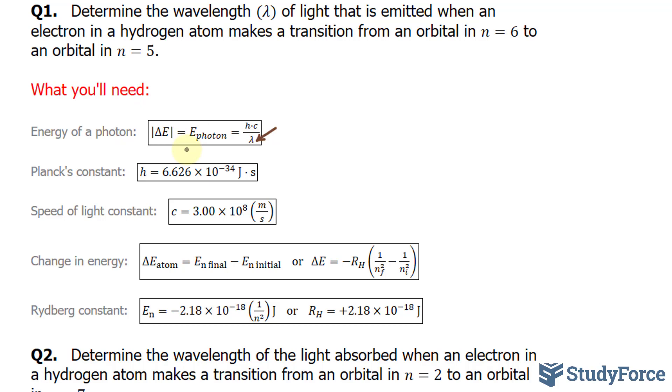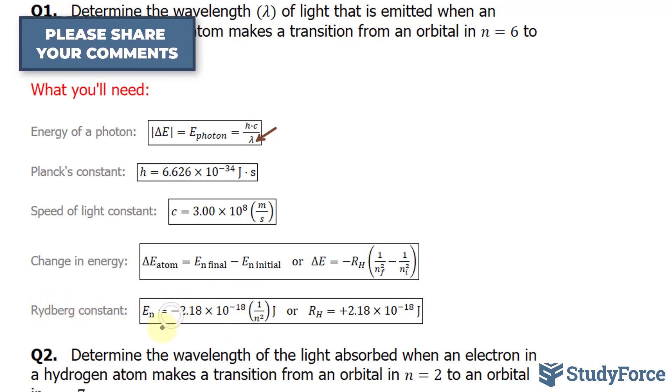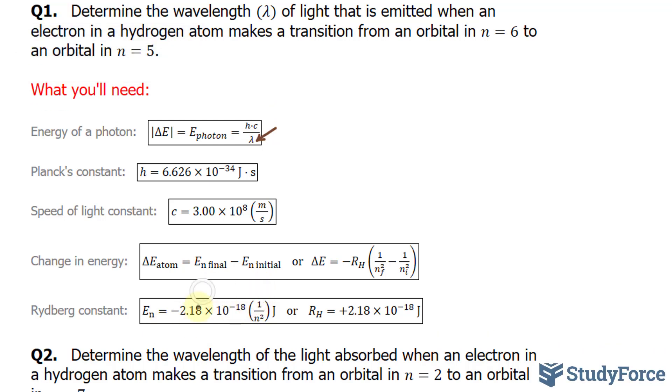Now there's two ways to find delta E. You can use this formula or you can use this formula called the Rydberg equation. If you use this formula, you need to use this particular constant where the constant is negative 2.18 times 10 to the power of negative 18. And this factor is being multiplied to 1 over whatever n is. You take this and substitute it into here. For the sake of simplicity,